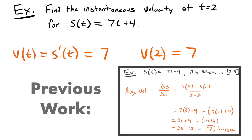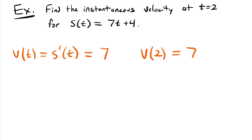When we found the average velocity for this same function on the interval from 2 to 3, we also got 7. That's just the nature of this degree-1 position function — because the power of t is 1, no matter where we are, the velocity is the same. That's why the average velocity equals the instantaneous velocity in this case. If measuring in feet and seconds, the instantaneous velocity of 7 is a rate of 7 feet per second.